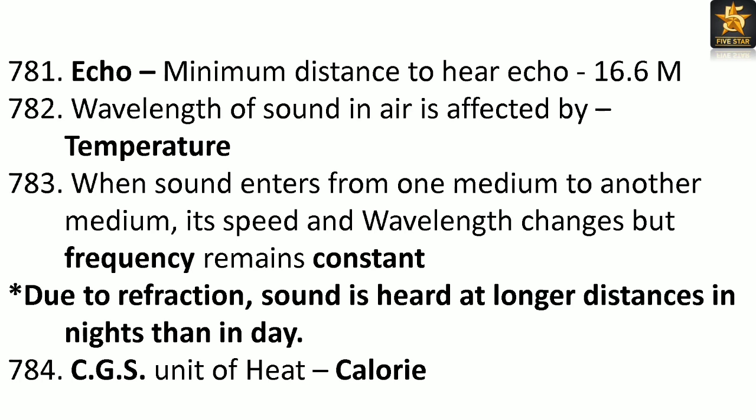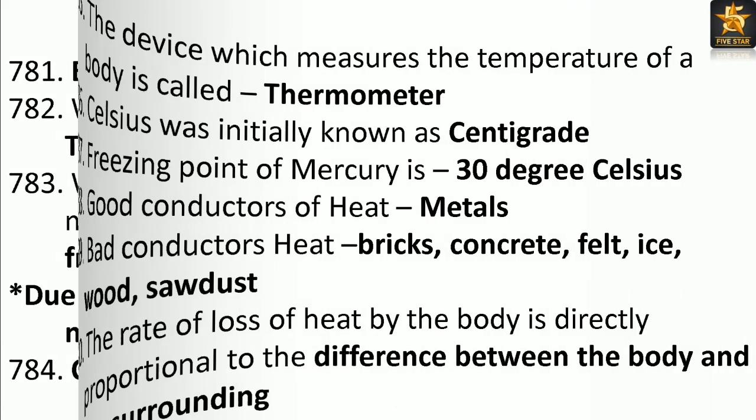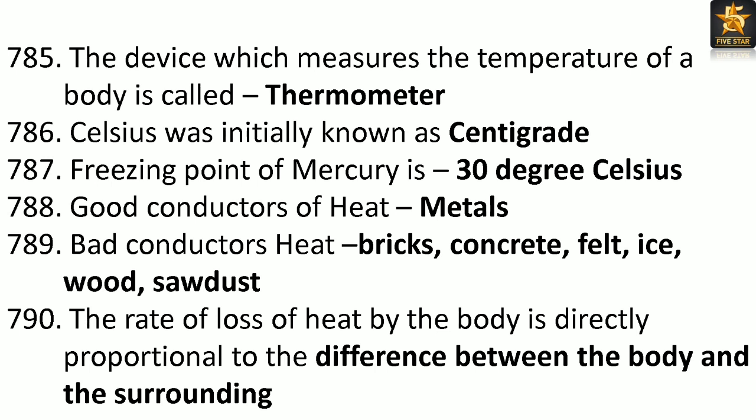CGS unit of heat: Calorie. The device which measures the temperature of a body is called a thermometer. Celsius was initially known as centigrade. Freezing point of mercury is minus 30 degrees Celsius. Good conductors of heat: metals.